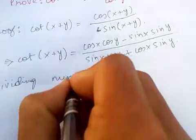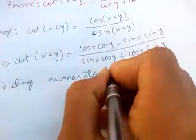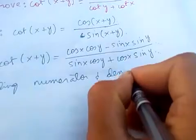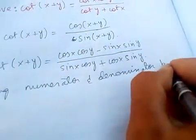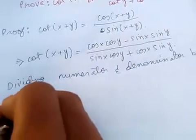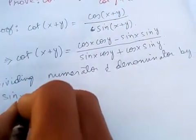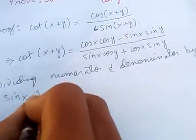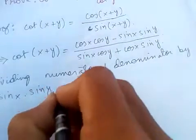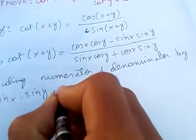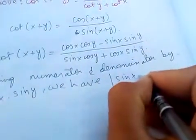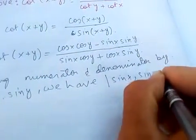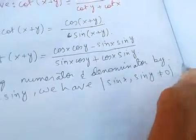Now dividing numerator and denominator by sin x sin y, such that sin x and sin y is not equal to zero.